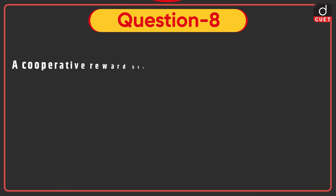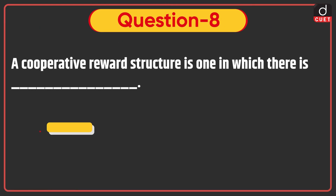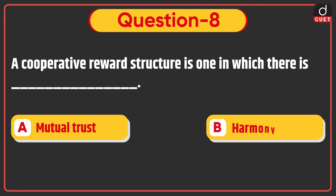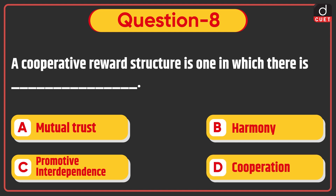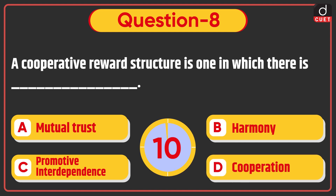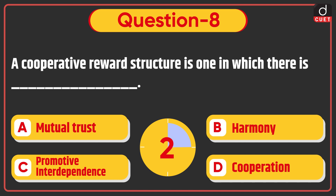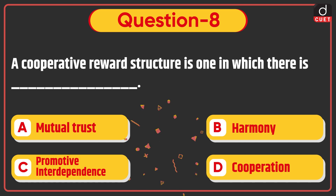Next question: A cooperative reward structure is one in which there is — Mutual Trust, Harmony, Promotive Interdependence, or Cooperation? The correct answer is Option C, Promotive Interdependence.